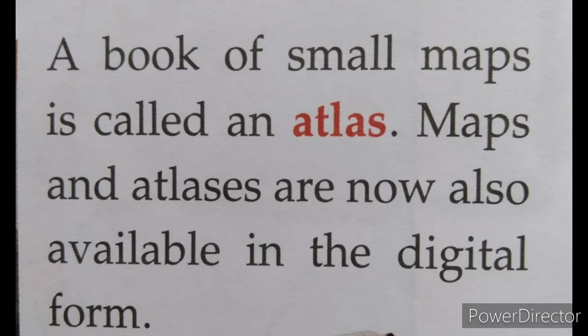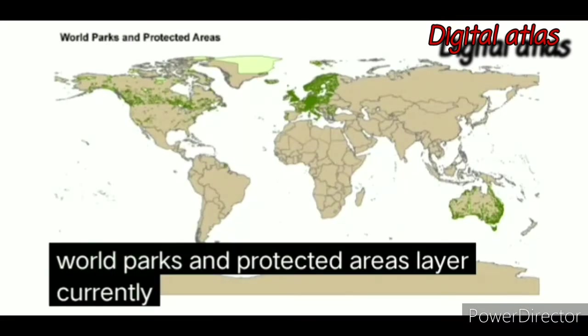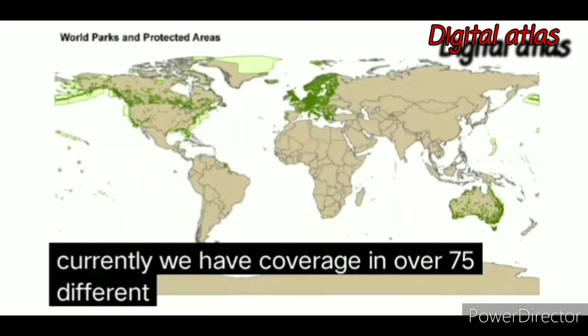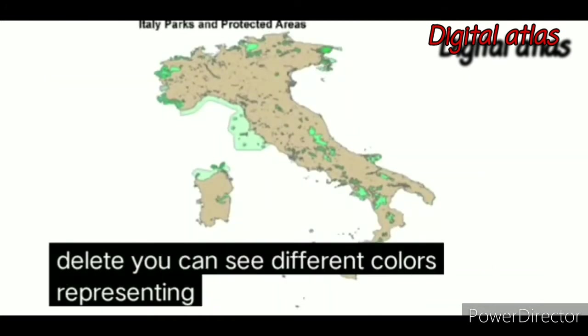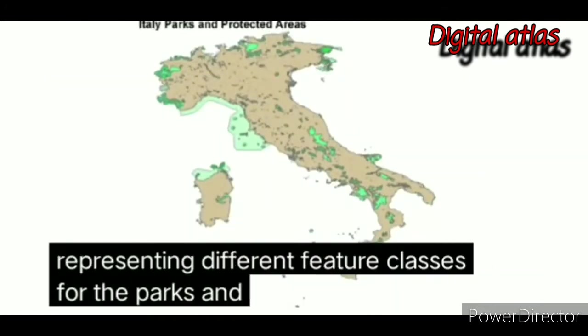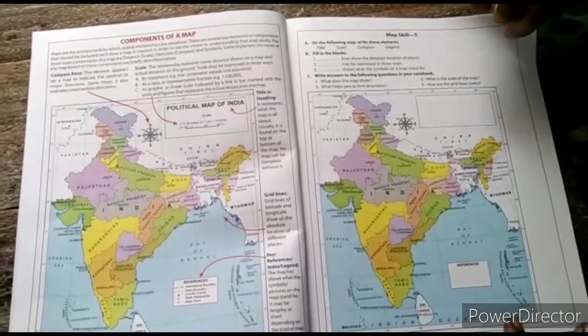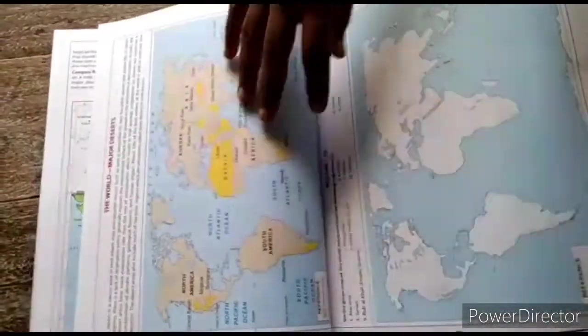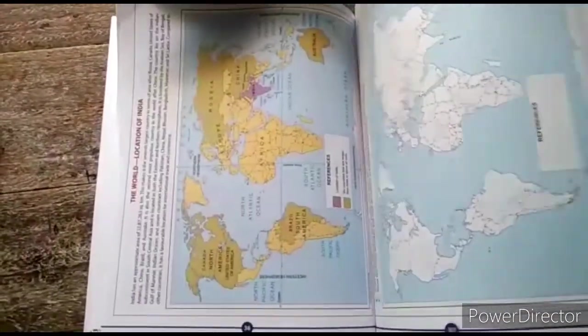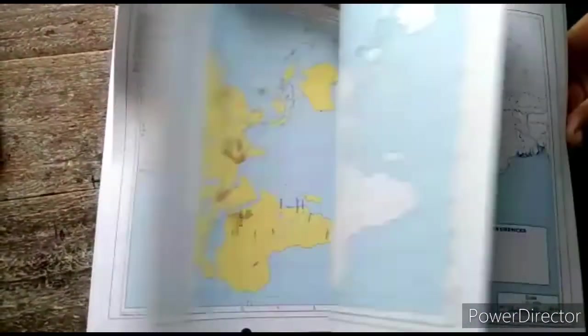A book of small maps is called an atlas. Maps and atlases are now also available in digital form. An atlas has a number of maps in it in printed form so that you can carry it as a book wherever you go. It is very helpful, especially for traveling.